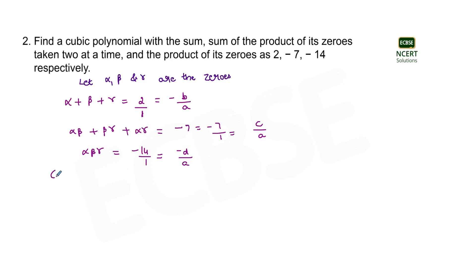So now if we compare all these three relationships then what we will obtain for the values of a, b, c, and d are: a will be equal to 1, as in all three cases a comes out to be 1, that is the denominator is 1. b equals minus 2 from the first relation. c from the second relation comes out to be minus 7. And d from the third relation comes out to be 14.